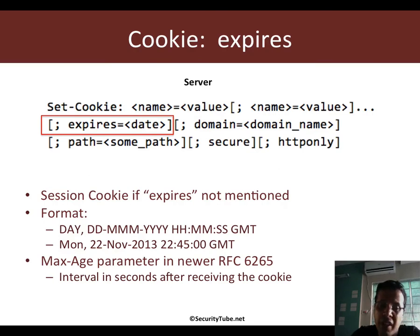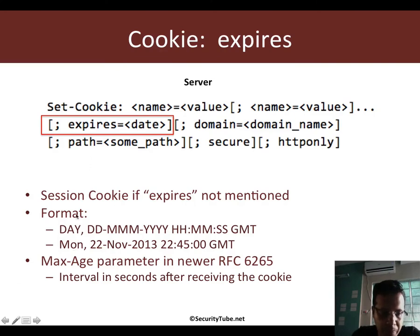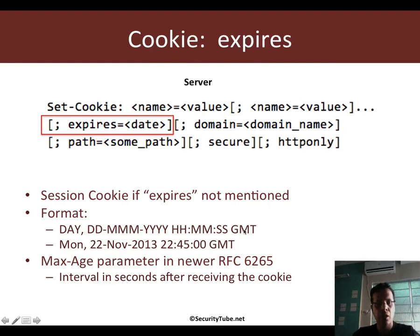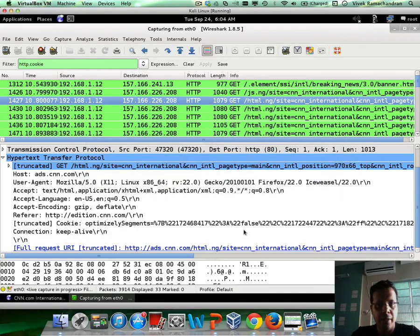Only if the expires field is mentioned is the cookie retained across browser restarts — very important. Assuming the expires field is there, the format is super simple: the day of the week, the actual date in the month, followed by the month, the year, and then hours, minutes, and seconds — all in GMT. Let me show you how this looks like.